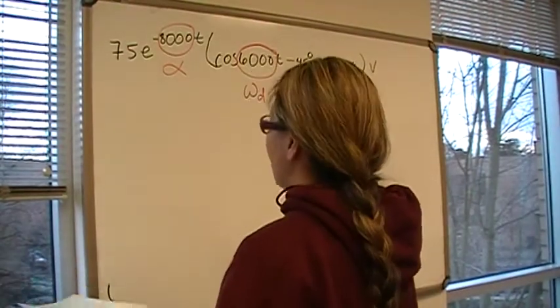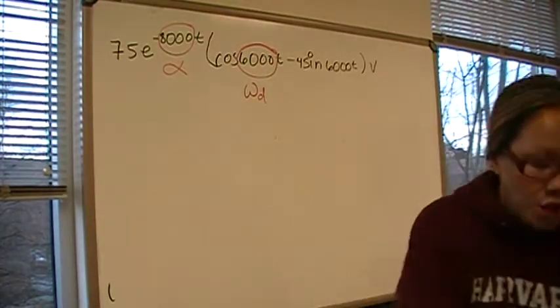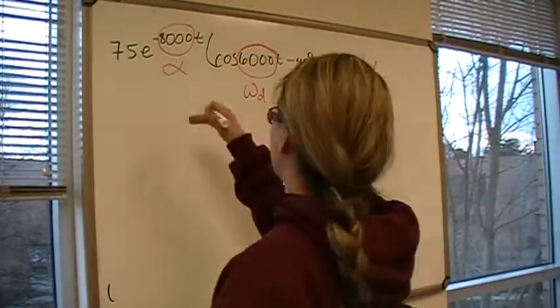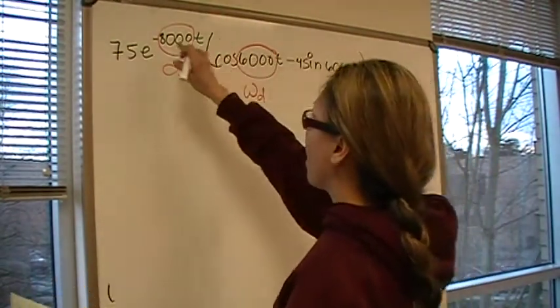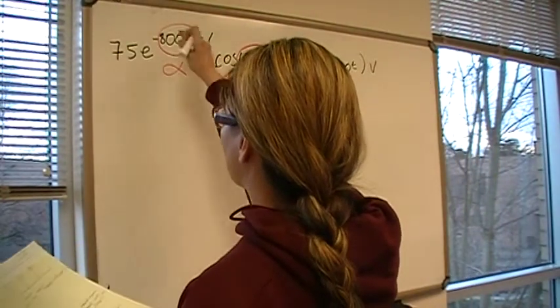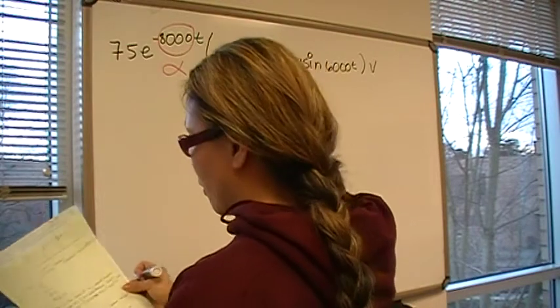That's because the natural response takes that format: cosine omega D, sine omega D, and e to the negative alpha t.